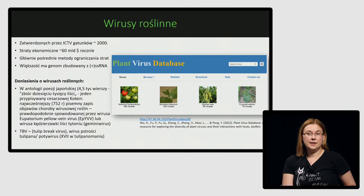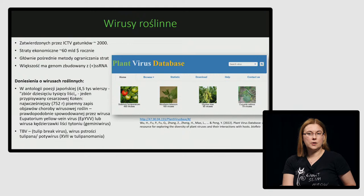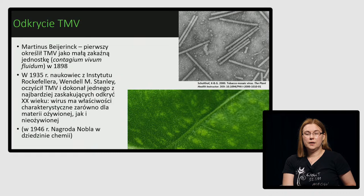Drugi popularny przykład to objawy przerwania koloru na tulipanach – bardzo popularne podczas tulipanomanii w XVII wieku w Holandii. To przerwanie kolorów, zwane pstrością, jest spowodowane wirusem pstrości tulipana – potywirusem, który znacząco osłabia rośliny. Natomiast początek wirusologii jako takiej wiąże się z odkryciem pierwszego wirusa – wirusa mozaiki tytoniu (TMV), który został zidentyfikowany pod koniec XIX wieku.